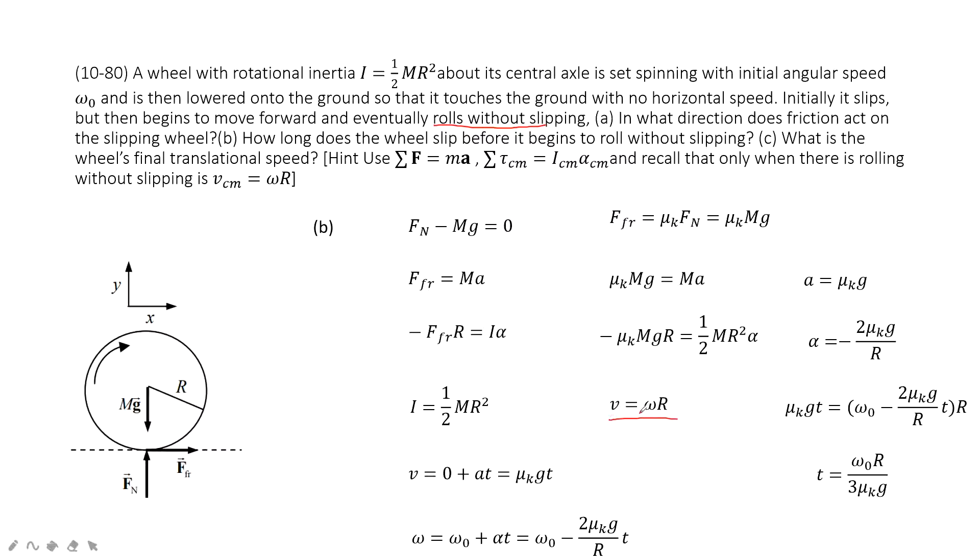It must satisfy this condition: the linear velocity equals omega times r. At this point in time, v equals omega times r. How can we find v? Initially the linear velocity is zero (it's stationary), plus acceleration times t.